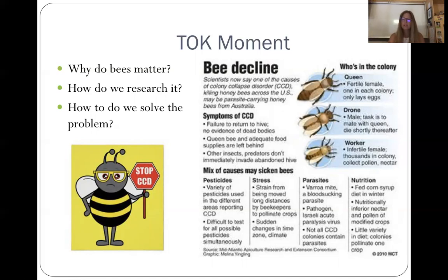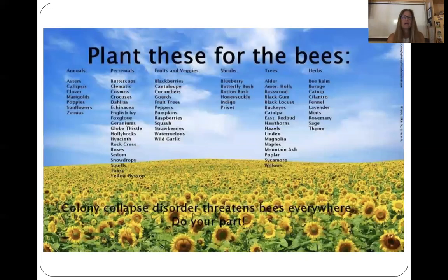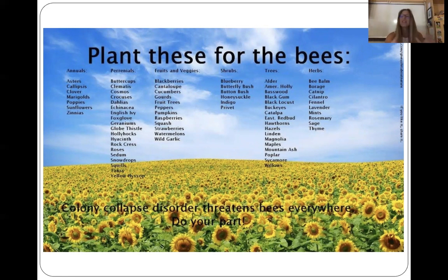Parasites could be a factor, and then the idea of poor nutrition. As we've gone to monoculture — as you go through the Midwest and see nothing but cornfields — bees are now eating only one type of nectar, and that isn't good, just like it's not good if you were to only eat Cheetos. These bees are eating essentially only corn nectar, and they need a variety in their diet. One of the things we talk about is how we can increase the diet of our bees, and here are all the different plants you can plant in your backyard to attract bees and help them out.